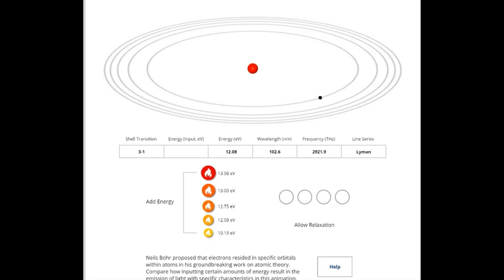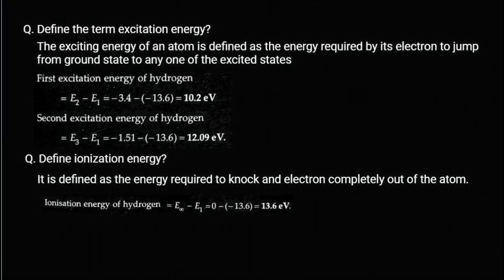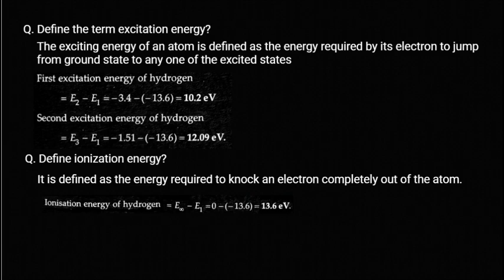The next concept is ionization energy. Suppose I supply so much energy that the electron is completely knocked out of the atom. The amount of energy required to completely knock an electron out of the atom is known as ionization energy. For the ground state, the ionization energy is 13.6 eV. If you supply 13.6 eV, the electron will be completely removed from the atom. That's it for today's class — thank you, and if you have any confusion please don't hesitate to ask.